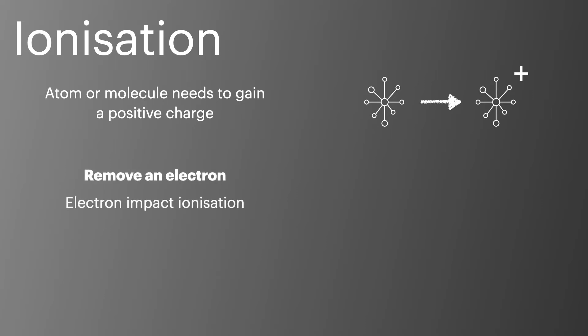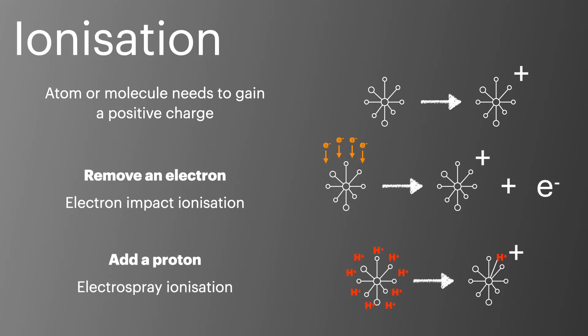If we're removing an electron, this is done using electron impact ionization. And if we're adding a proton, this is done using electrospray ionization. It's important that we can describe in detail how both of these work.